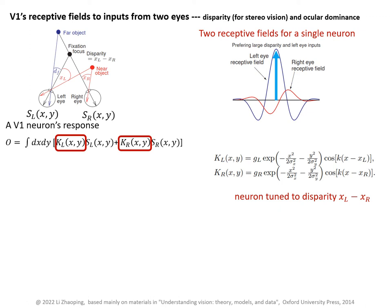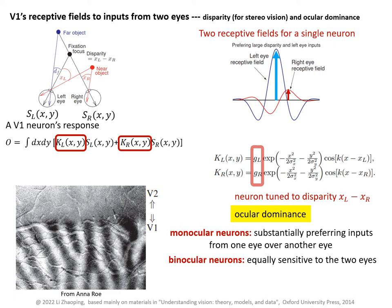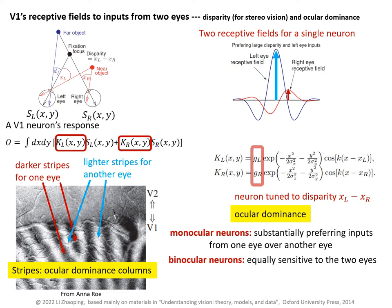The amplitude for the left eye's receptive field filter is larger than that for the right eye's filter, modeled by two different values GL and GR. So this neuron is more sensitive to inputs from the left eye than the right eye. Such differential sensitivity is called ocular dominance. In V1, some neurons prefer inputs from the left eye and some prefer inputs from the right eye — these are called monocular neurons. Other V1 neurons are equally sensitive to both eyes and are called binocular neurons. Neighboring V1 neurons tend to prefer the same eye, and using optical imaging, one can visualize these clusters of V1 neurons preferring different eyes as dark and light stripes — called ocular dominance columns.